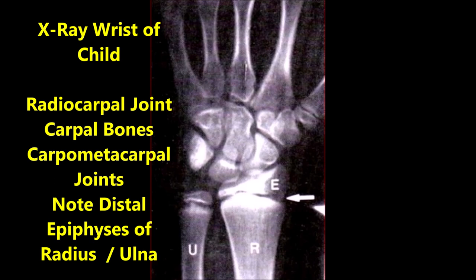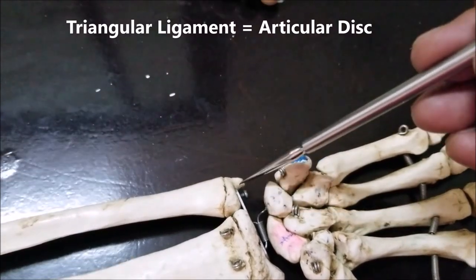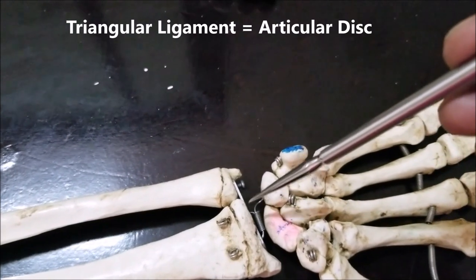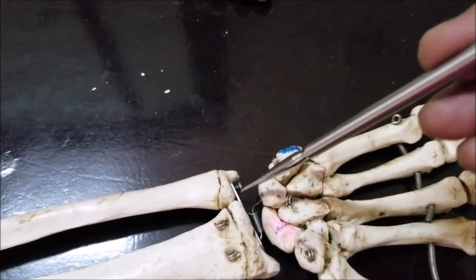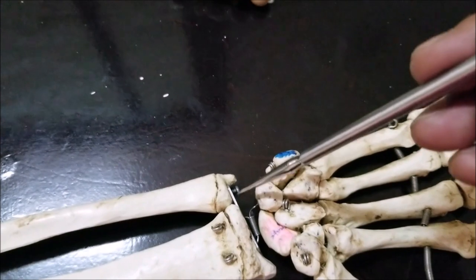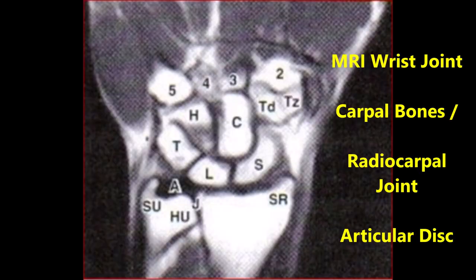This is an x-ray of the wrist of a child showing the radiocarpal articulation. Note the distal epiphysis of the radius and the ulna. The reason why the ulna does not articulate is because there is a triangular ligament, also called the articular disc. The apex of the triangular ligament is from the ulnar styloid process and the base is attached to the radius. Therefore, this articular disc separates the ulna from the carpal bones. It not only holds the ulna and the radius together, but also plays a very important role in the pivot movement of pronation. This is the coronal MRI of the wrist joint showing the carpal bones, the radiocarpal articulation, and the articular disc between the ulna and the carpal bones.